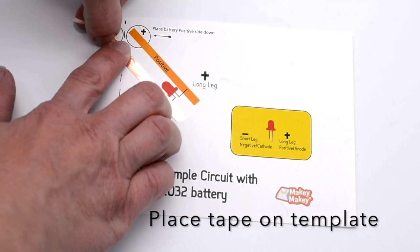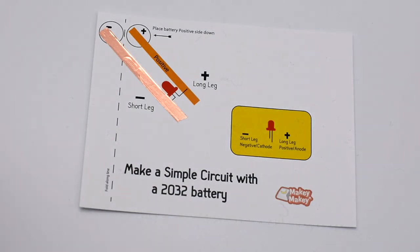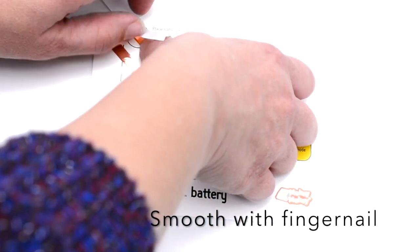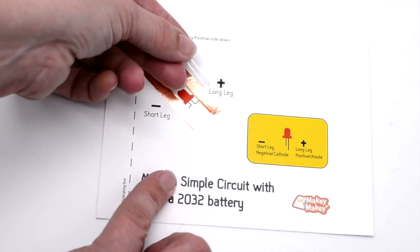So you're going to take your copper tape and you're going to place it really smoothly on the template. I use my fingernail to keep it smooth and push it down and then you just tear it. You don't have to use scissors.